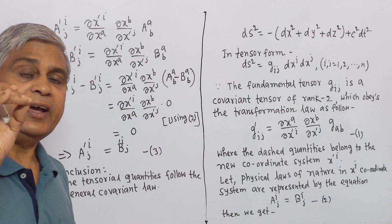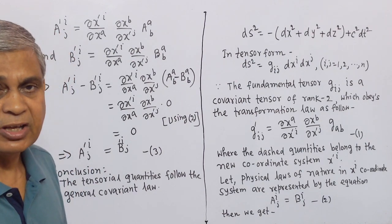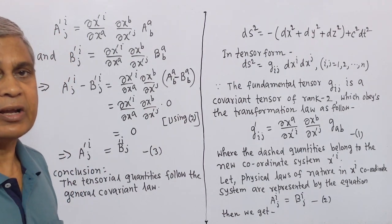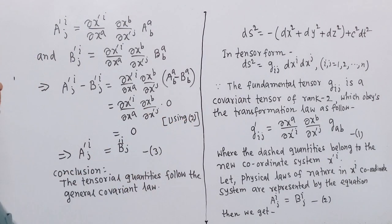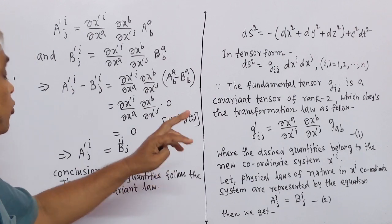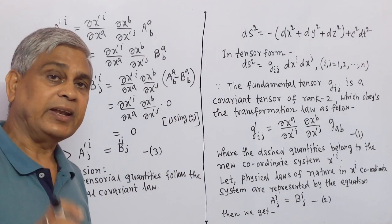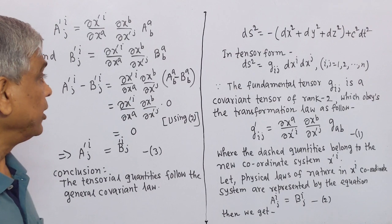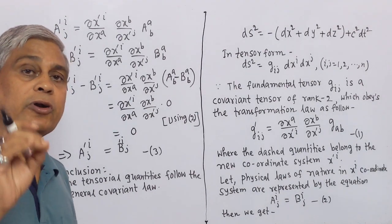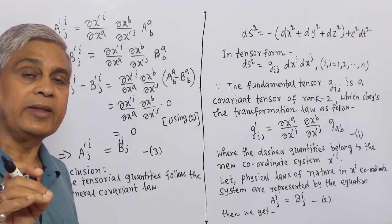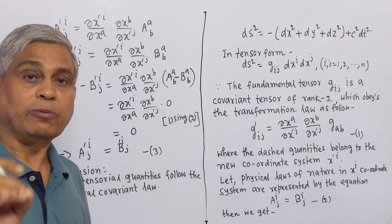So our conclusion is that tensorial quantities follow the general covariant law. In the general theory of relativity, we use the principle of covariance by the application of tensor calculus.